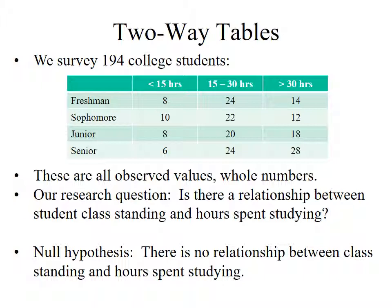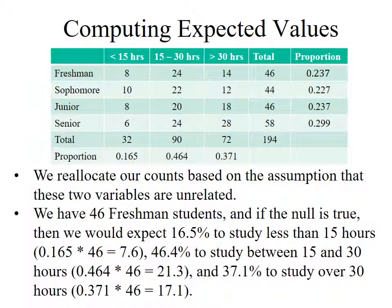The null hypothesis is that there is no relationship whatsoever between class standing and the number of hours spent studying — any deviation is just due to random variation in this particular sample of 194 students. If someone else gathered a different sample, they'd be just as likely to see freshmen studying more than seniors. So how do I turn this into expected values? It's more intricate here because I don't start with any assumption about the distribution of studying hours — that has to come out of the data. What I do is reallocate the counts based on the assumption that the two variables are unrelated.